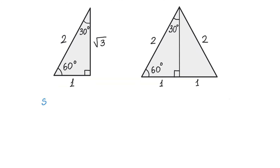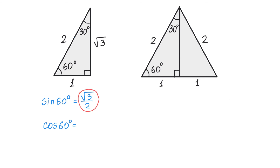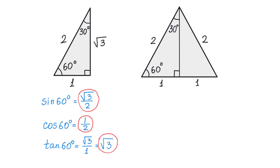Let's start with sine of 60 degrees. By definition, sine of an angle is the opposite side divided by the hypotenuse. Then sine of 60 degrees will be square root of 3 over 2. Next, cosine of 60 degrees — by definition, cosine of an angle is the adjacent side divided by the hypotenuse. Then cosine of 60 degrees will be 1 over 2. And now let's find tangent of 60 degrees. We find tangent of an angle by dividing the opposite side by the adjacent side. Then we will have square root of 3 over 1, which equals square root of 3.